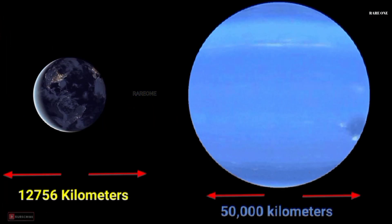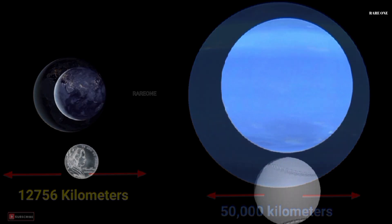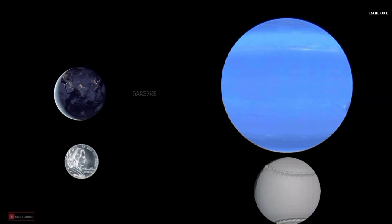With an equatorial diameter of nearly 50,000 kilometers, Neptune is a true giant, about four times wider than Earth. To give you a sense of scale, if Earth were the size of a nickel, Neptune would be as big as a baseball.